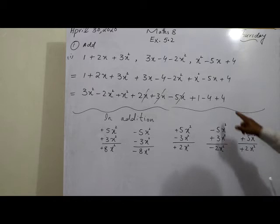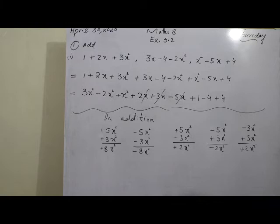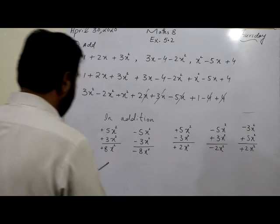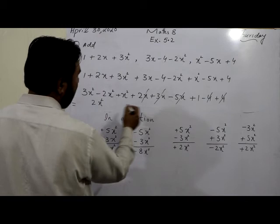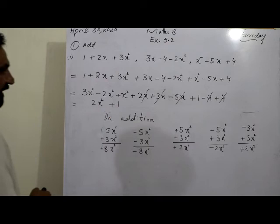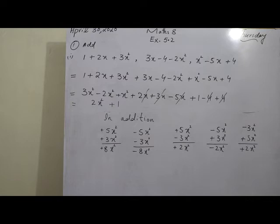For the constant terms: plus 4 and minus 4 have opposite signs, so 4 minus 4 equals zero — they cancel each other. Then we also have plus 1 remaining. So the final answer for question 1 part 1 is 2x² plus 1, after 3 minus 2 gives 1, and 1 plus 1 gives 2x², with the constants cancelling to leave just 1.